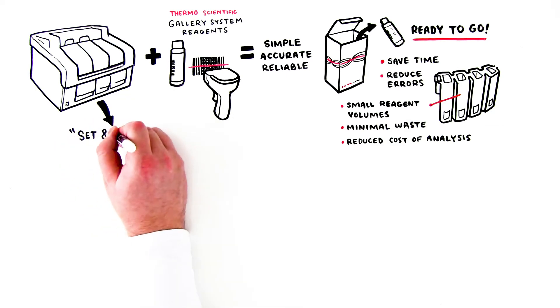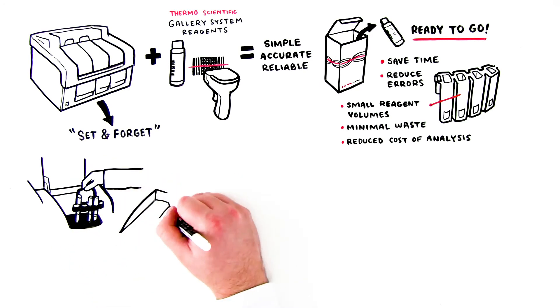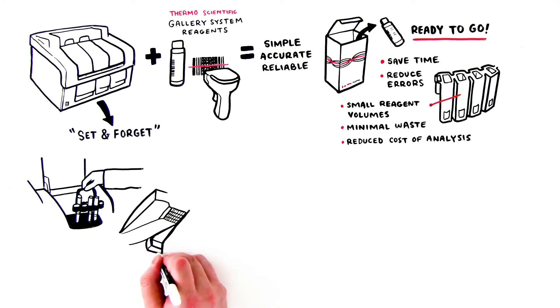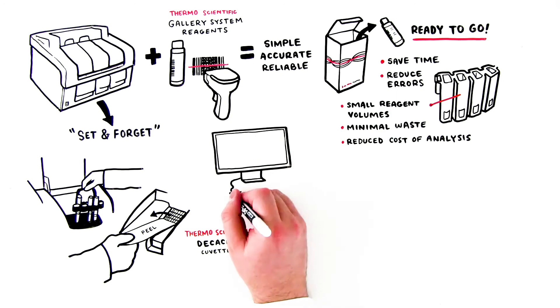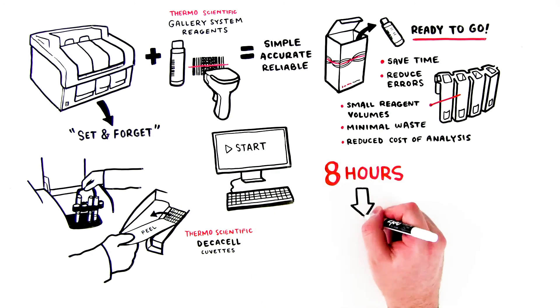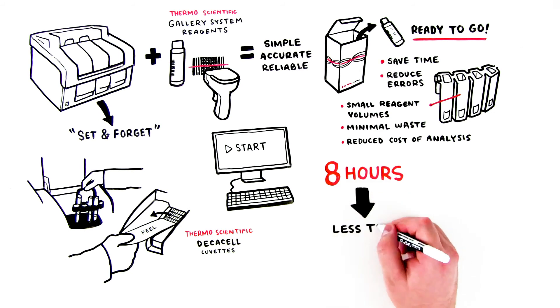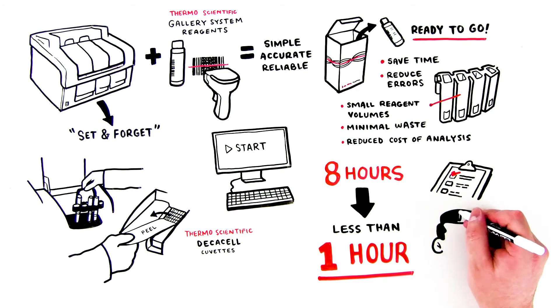And because it's a truly set-and-forget system, all Tom and Mary have to do is load it up with the Thermo Scientific ready-to-use system reagents or assay kits, standards, samples, and unique Thermo Scientific DecaCell cuvettes, hit a couple of buttons, and walk away. So what was going to take at least eight hours, with multiple starts and stops, can now be completed in less than an hour. Meaning they can start whittling down that to-do list. And that makes Timothy mighty happy indeed.